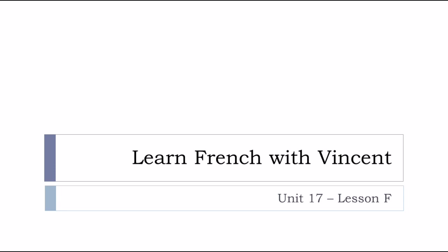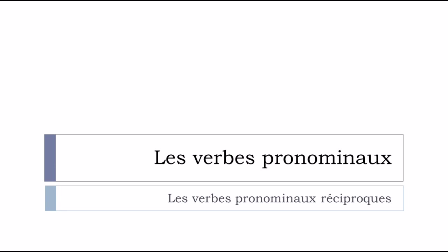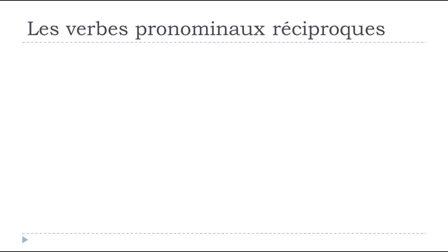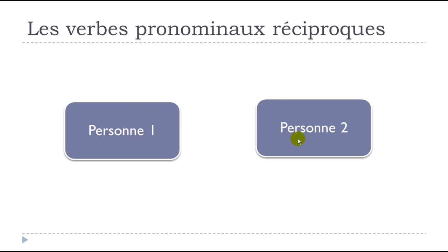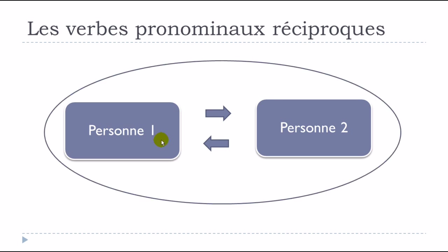Bonjour à tous and welcome to Learn French with Vincent. This is Unité 17, Leçon F. In this lesson we'll see les verbes pronominaux réciproques, as opposed to les verbes pronominaux réfléchis seen previously. The key concept is that you need two persons: person number one does something that affects person number two, and vice versa.